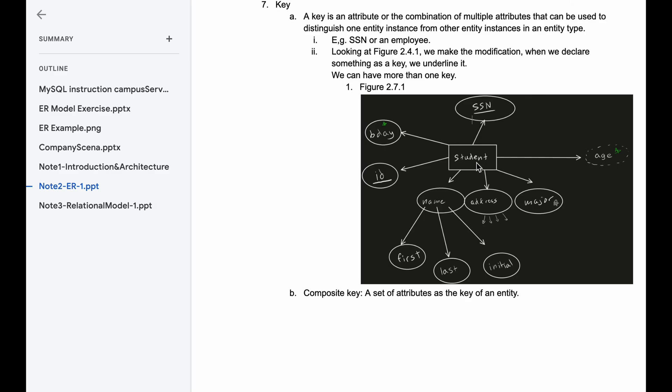So if we have a student instance like this, our ID and our social security number would be our keys. ID is really in the school system what distinguishes students from each other. That's why they have that. Social security number differs every person from each other. So these are key attributes.